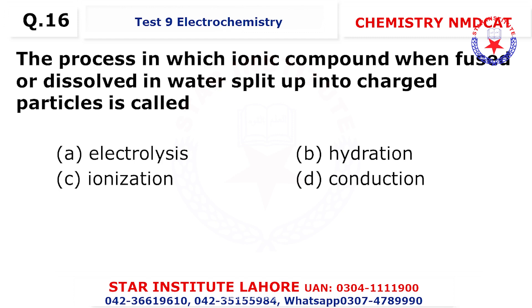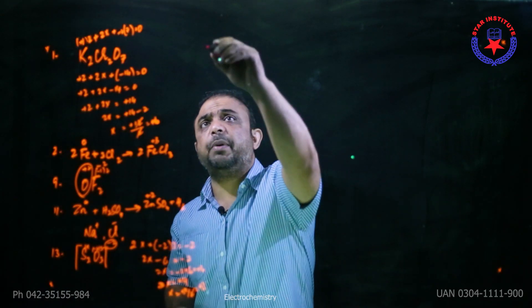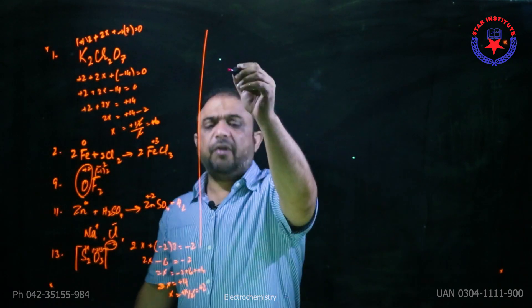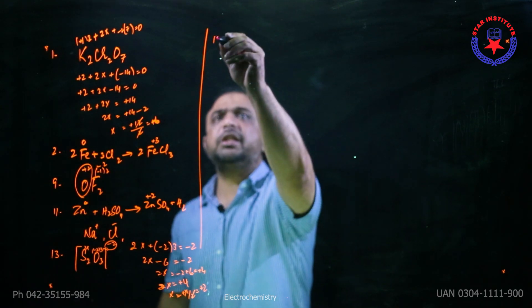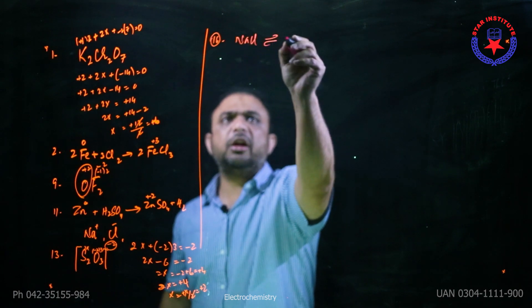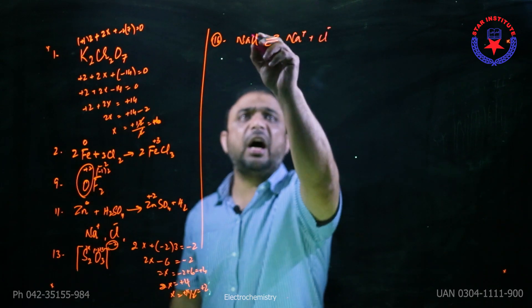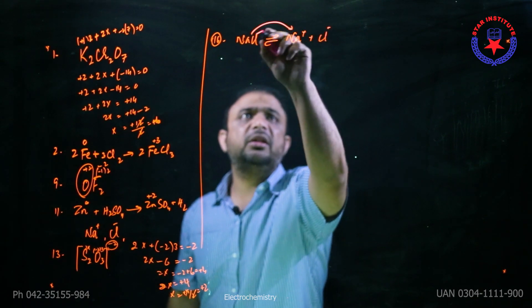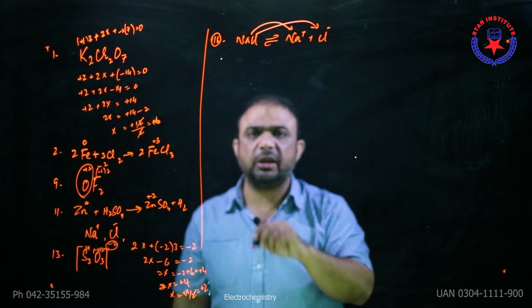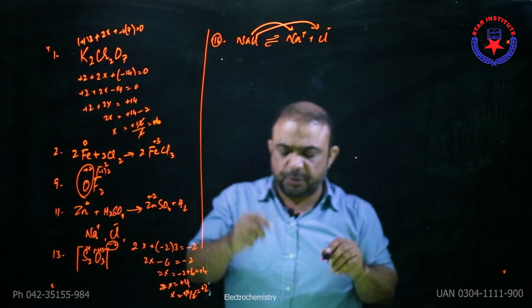Question number 16: the process in which an ionic compound, when fused or dissolved, splits up into its ions. For example, NaCl goes into Na⁺ and Cl⁻ ions. This splitting into ions is ionization. Electrolysis is the answer when those ions move toward their respective poles. So here the choice is ionization, not electrolysis.